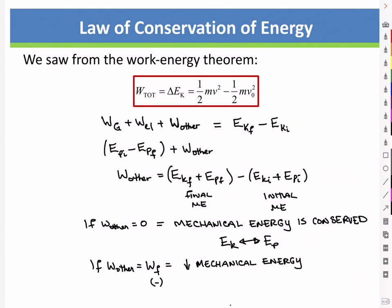The law of conservation of energy tells us that energy is always conserved. When we don't have non-conservative forces at play, mechanical energy is conserved and we're just going back and forth between kinetic and potential energy. When we do have non-conservative forces like friction, it steals some energy from the mechanical energy and converts it into other forms, such as thermal energy.